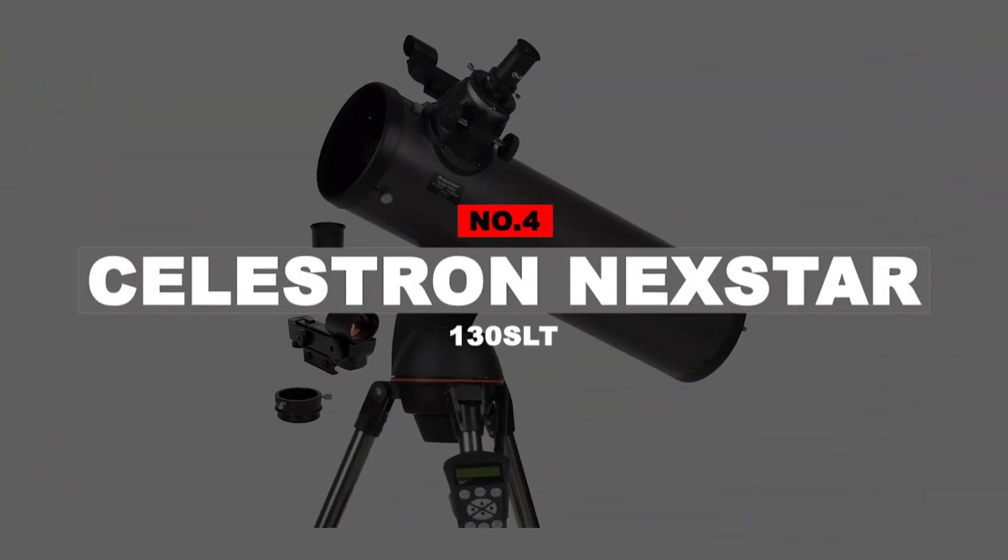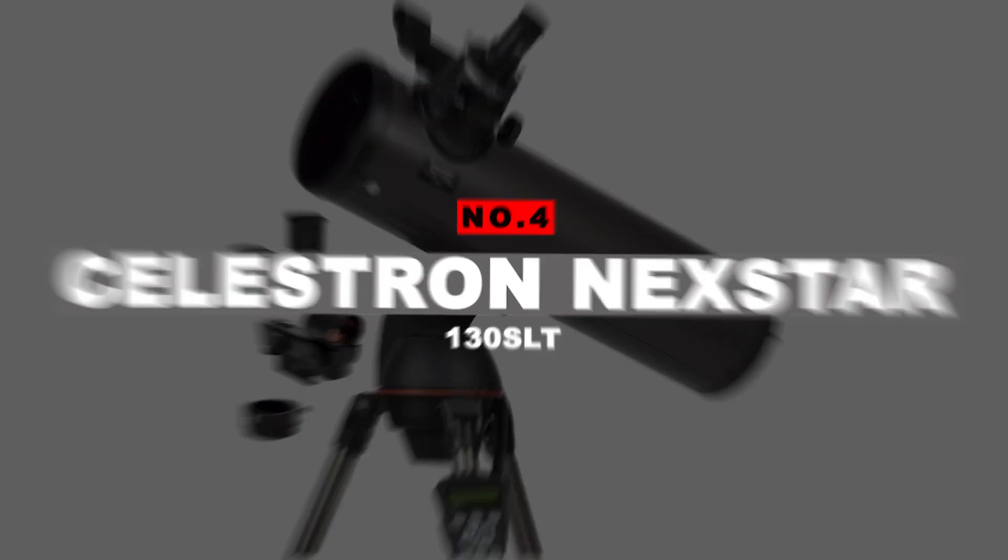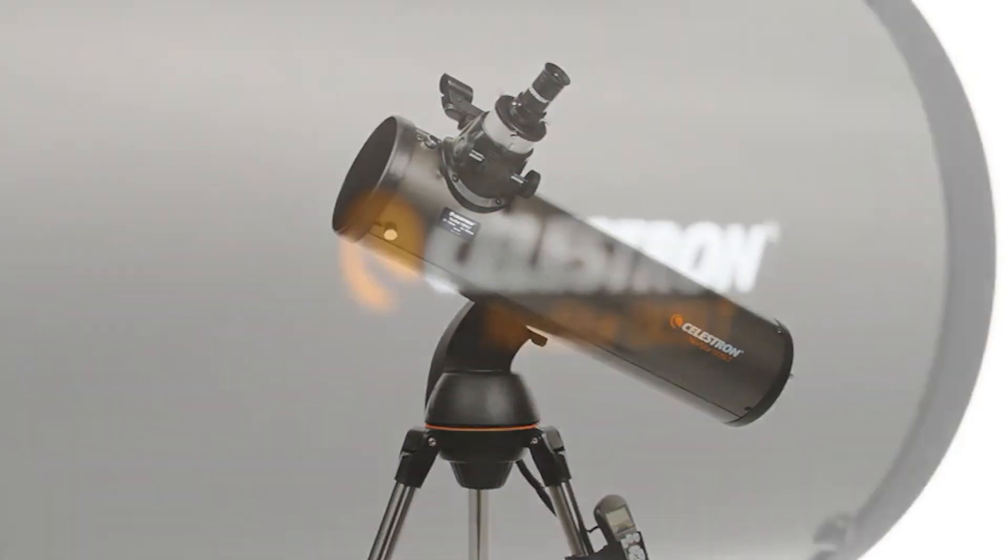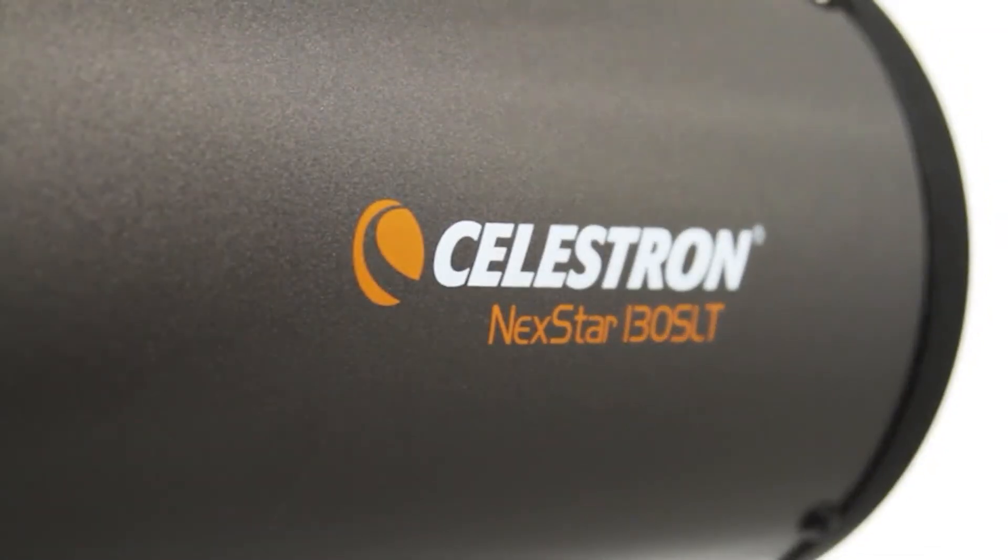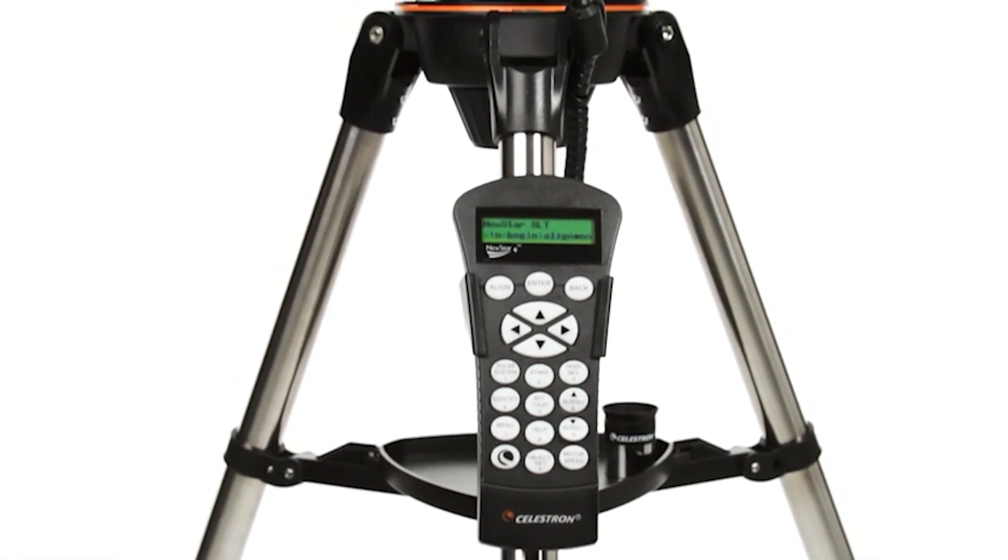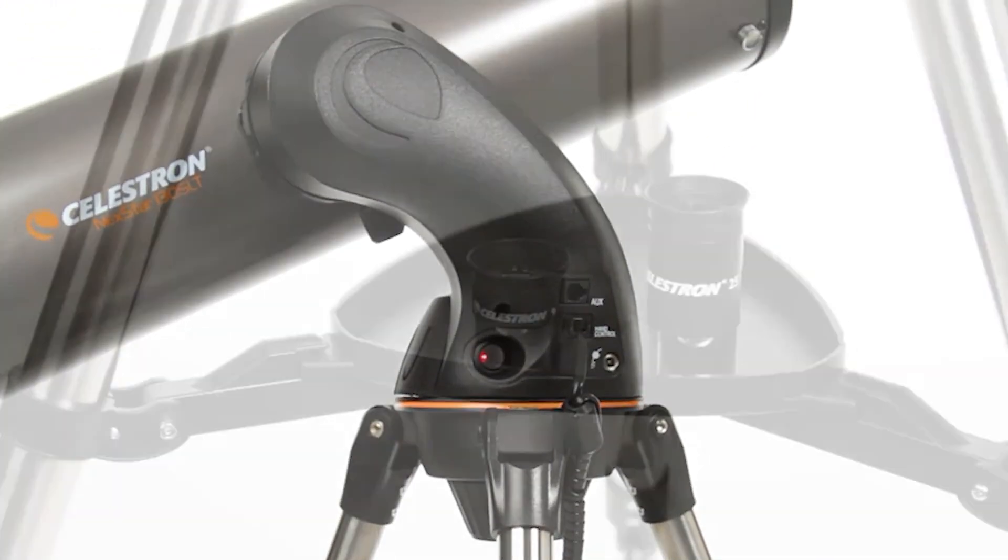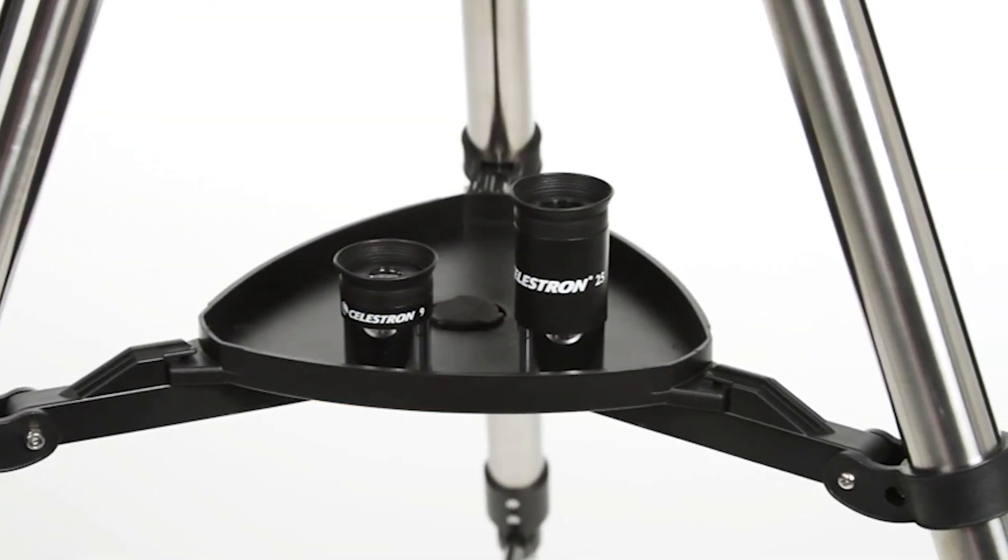Number 4. Celestron Nexstar 130SLT. The Celestron Nexstar is the best computerized telescope for beginners. Just give yourself time to learn the ins and outs before trying to locate your own comet. The controls are more user-friendly than other go-to mounts, and Celestron's own skyline setup is as easy as aiming at any three bright points in the sky.